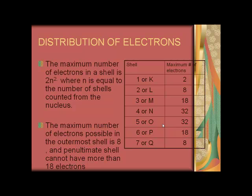The table here gives the number of shells and the maximum number of electrons in each shell. Shell 1 or K shell can have a maximum of 2 electrons. Shell 2 or L shell can have a maximum of 8 electrons. Shell 3 or M shell can have a maximum of 18 electrons.